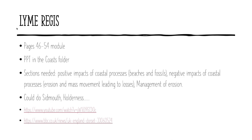I'm suggesting Lyme Regis because it ticks all the boxes well, but there are possible alternatives. The thing to remember is what this case study needs to cover — that's the third bullet point on screen. It needs to cover the positive impacts of coastal processes. If you didn't have coastal processes you wouldn't have beaches, and beaches are popular with tourists who bring in money. I chose Lyme Regis partly because of the fossils — it's part of the Jurassic Coast, a really popular place to go fossil hunting which attracts more visitors and makes more money.